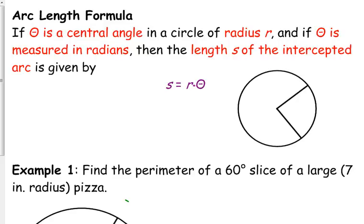S equals R times theta. S is the length of the arc, so I'm going to label my picture to go along with my equation here. S is the arc length, that's S. R is, of course, our radius.